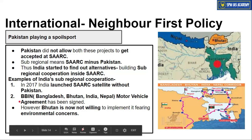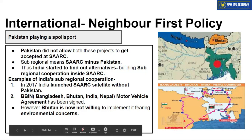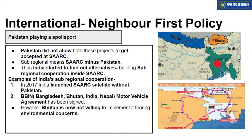India also got the Motor Vehicle Agreement signed between four SAARC countries — Bangladesh, Bhutan, India, and Nepal — known as the BBIN Motor Vehicle Agreement. The agreement has been fully signed among the four countries, but implementation is pending because Bhutan fears environmental concerns: if highways easily connect Bhutan, a large number of tourists from India would enter Bhutan and damage its environment.